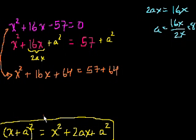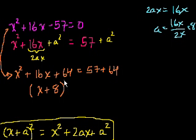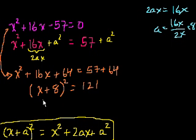Now that the left-hand side expression takes this form, I can rewrite it as x plus a squared. We know that a is 8, so it becomes x plus 8 squared is equal to — what's 57 plus 64? — it's 121. Now we have what looks like a fairly straightforward equation. It's still technically a quadratic, but we can solve it without using the quadratic formula or having to factor.